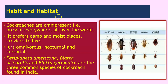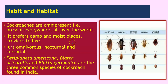Habit and habitat. Habit is the lifestyle of cockroaches and habitat is the place where they are found. Cockroaches are omnipresent — that is, they are present everywhere all over the world. They prefer damp and moist places to live. They are omnivorous, nocturnal, and cursorial.